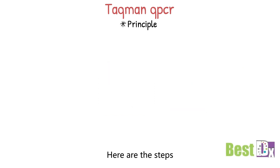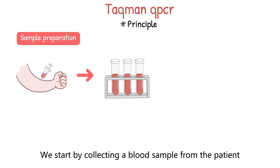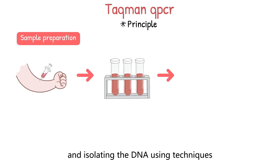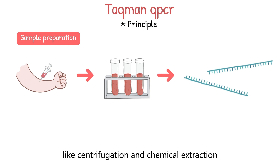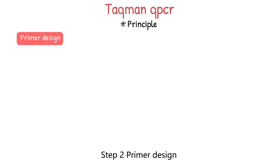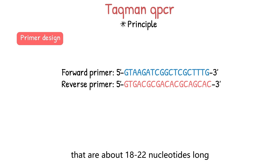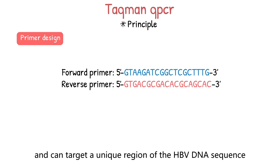Here are the steps. Step 1 is sample preparation. We start by collecting a blood sample from the patient and isolating the DNA using techniques like centrifugation and chemical extraction. Step 2 is primer design. We design specific primers that are about 18 to 22 nucleotides long and can target a unique region of the HPV DNA sequence.